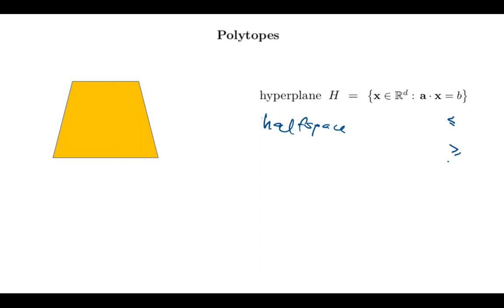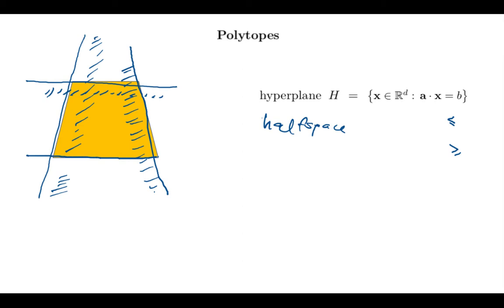And so if I have now an intersection of half spaces, we will call this a polyhedron. And if this polyhedron is bounded, I claim we will get again a polytope. So in this case, you might have half spaces of the sort where I'm on this side of this line, and then another line and a half space. And lo and behold, the intersection of these four half spaces gives me the same trapezoid.